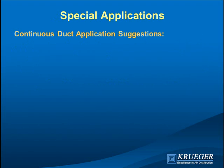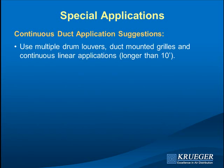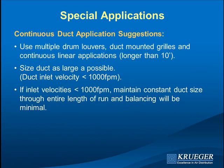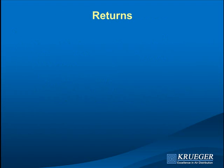A special application is a continuous duct with multiple grills — duct-mounted grills, grills on boots, or drum louvers. Balancing them can be tricky; at high velocity, the first diffuser can actually draw air into the duct instead of blowing out. Use multiple drum louvers if the run exceeds 10 feet. Size the duct so inlet velocity is no more than 1,200 feet per minute — 1,000 would be better — and keep the duct that size all the way along without stepping it down. Static regain then provides constant static pressure down the duct, making the diffusers self-balancing.